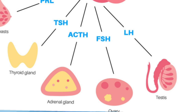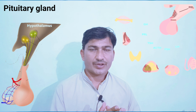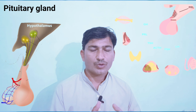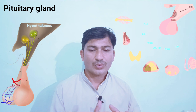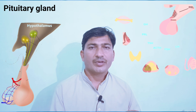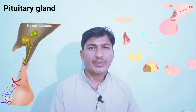The third important trophic hormone of the anterior pituitary gland is follicle stimulating hormone, or FSH. This hormone develops and activates the gonads. In males, the gonads are called testes — under FSH, they develop and become mature. In females, the gonads are called ovaries — FSH also helps them develop and become mature.